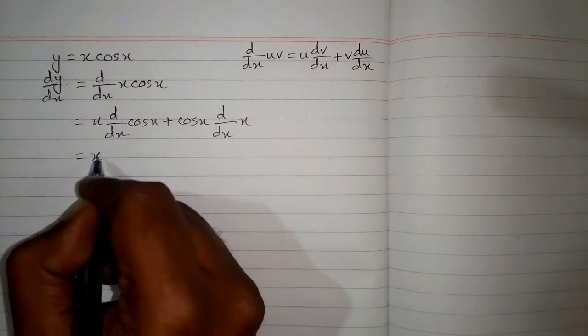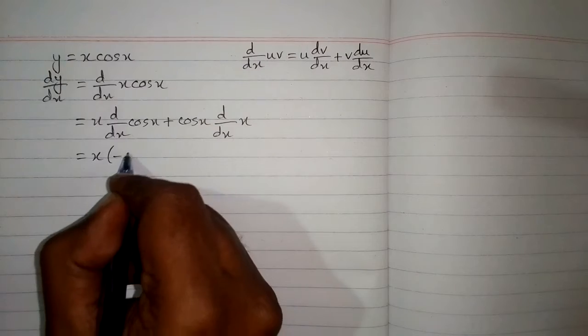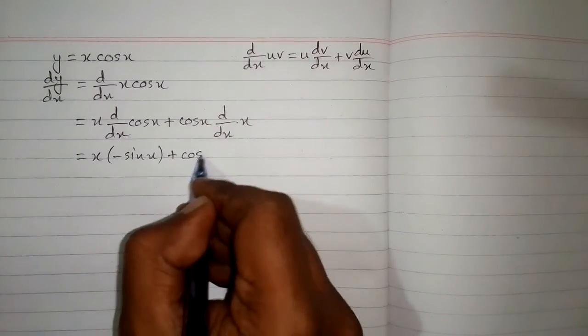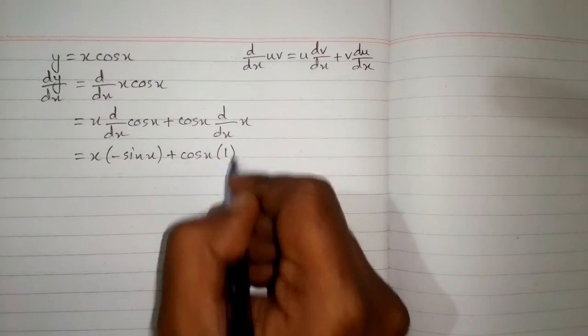Now first we will write this x and the derivative of cos x is minus sin x plus cos x and the derivative of x is 1.